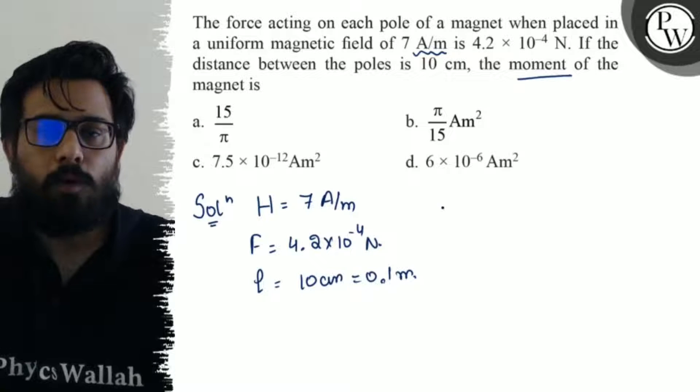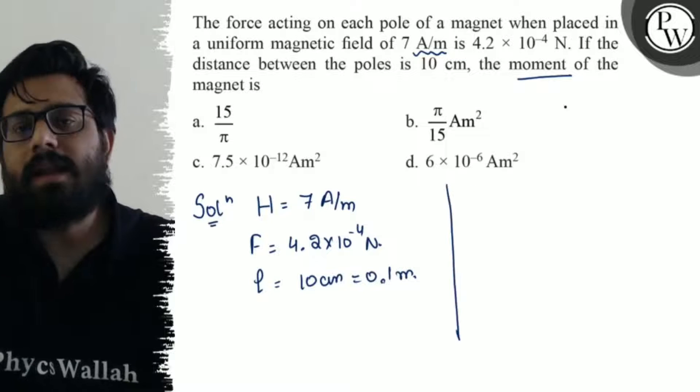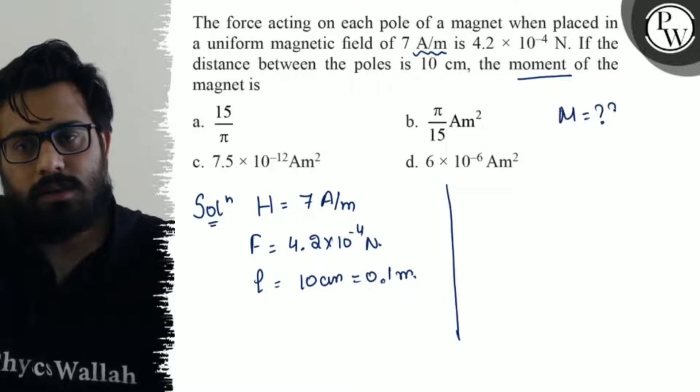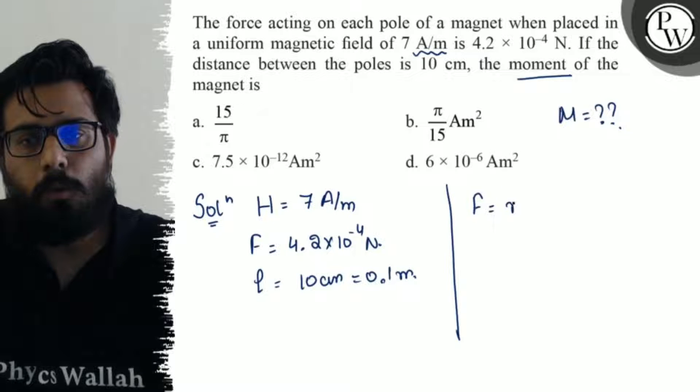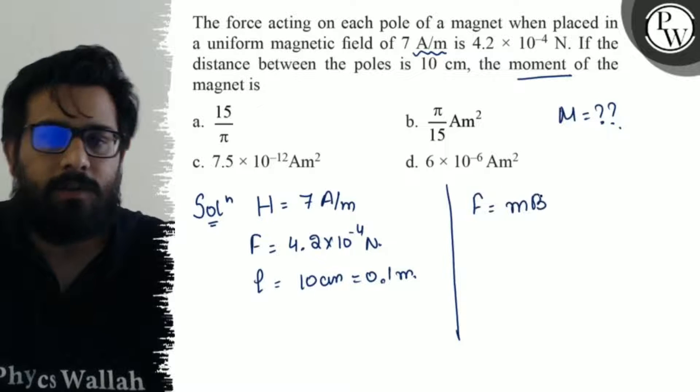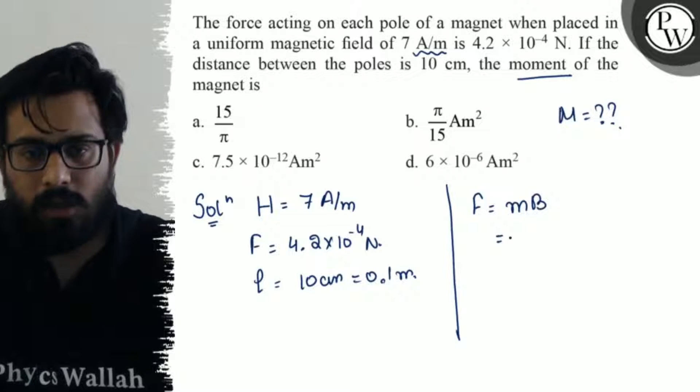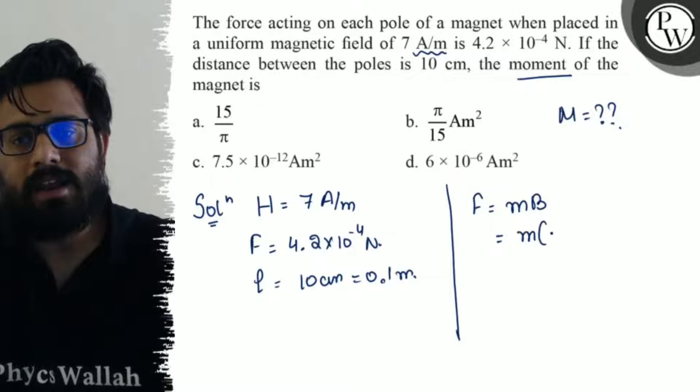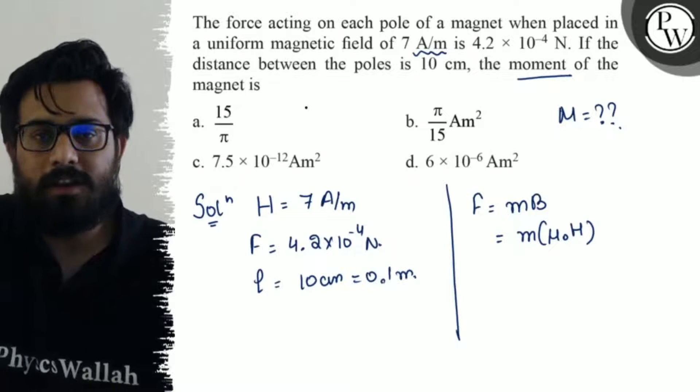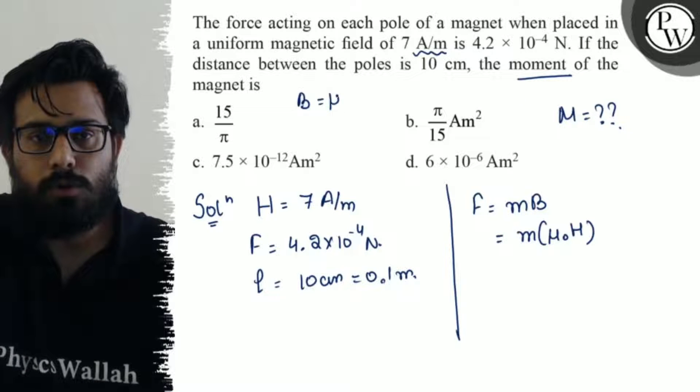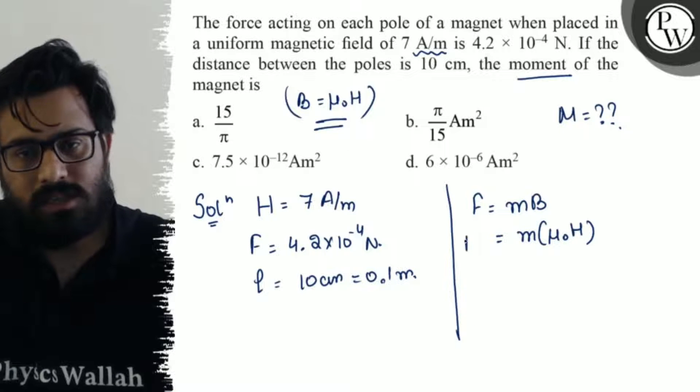How do you find out the magnetic moment? So we know the concept that F equals pole strength into magnetic field. And we also know that the magnetic field can be written as mu naught into magnetizing field. We have the relation B equals mu naught H. From this relation, we can say this.